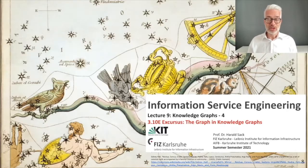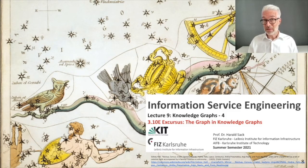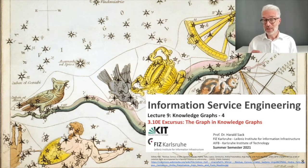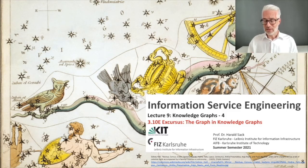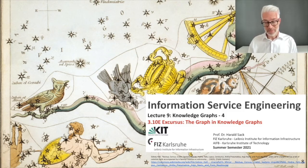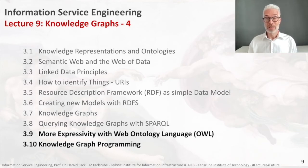We have one additional excursion: the graph in knowledge graphs. All this time we have been talking about knowledge graphs, but so far we have never made use of the property that we are dealing with graphs. To do so, we need to learn a little bit of graph theory — to find out, for example, what an important node in a knowledge graph is, how to compare two knowledge graphs when choosing one for a specific purpose, how to characterize and compare knowledge graphs, and how to determine the importance of a node or an edge. This will be the subject of the last excursion of this lecture.